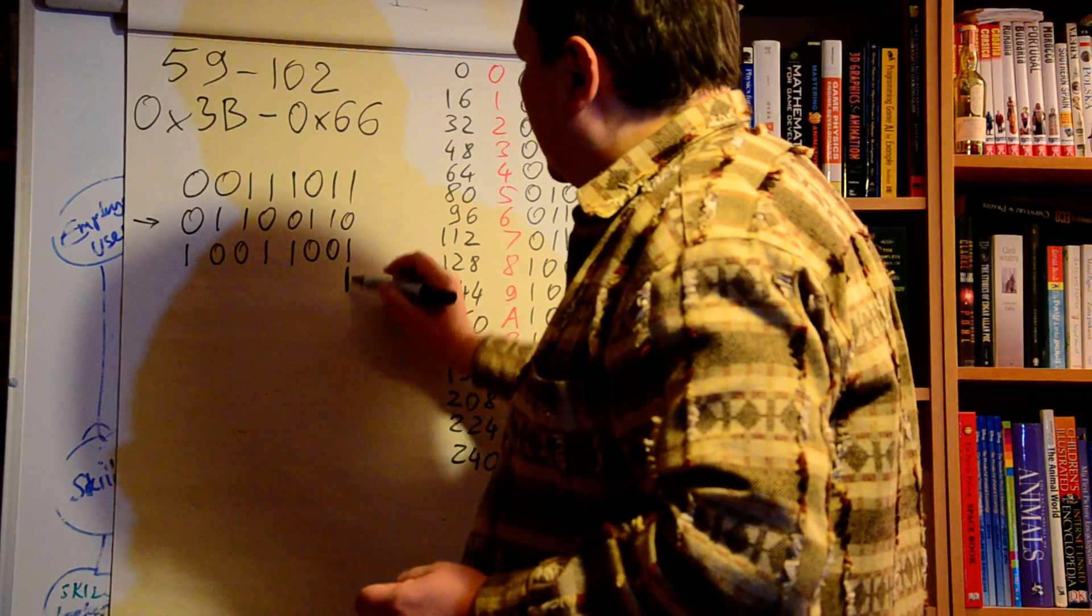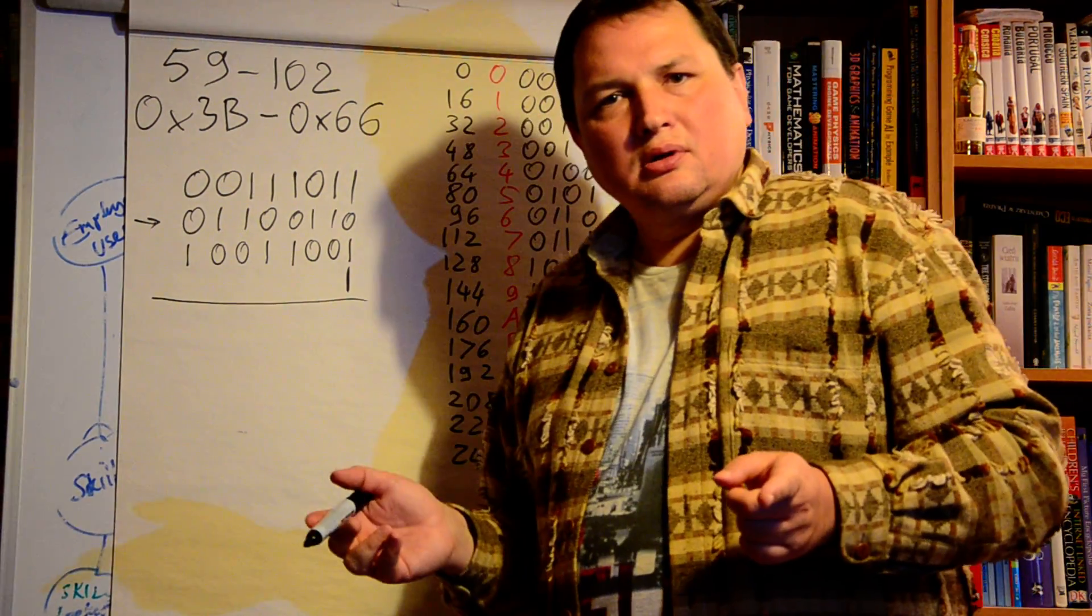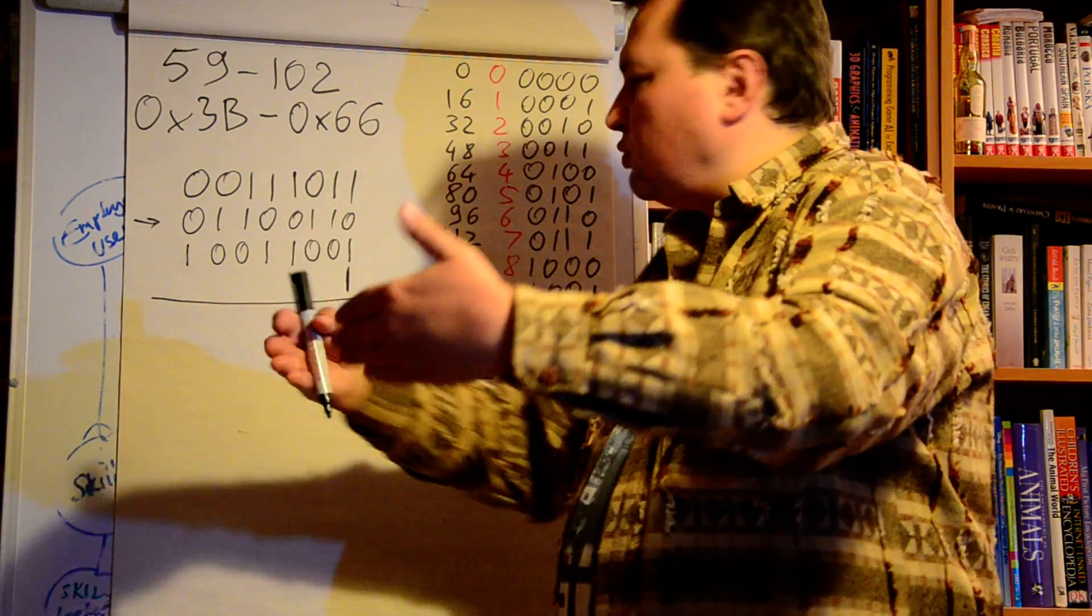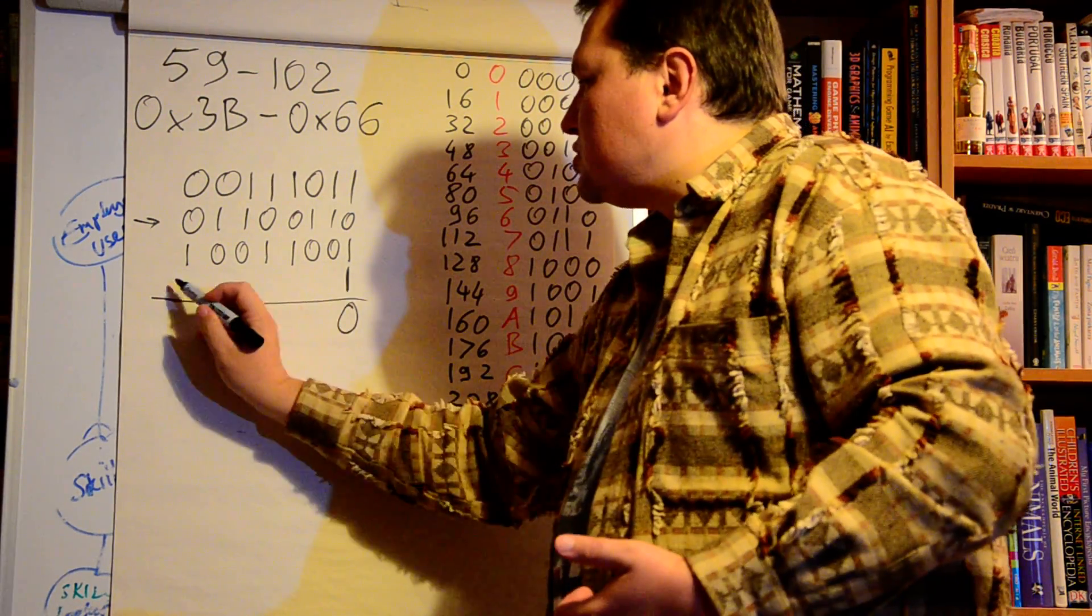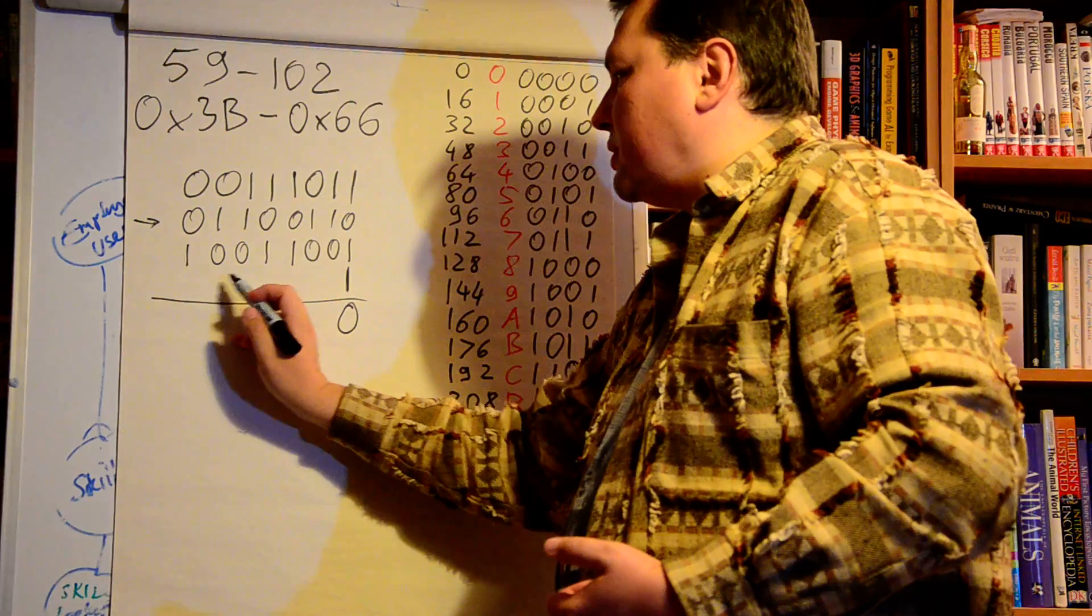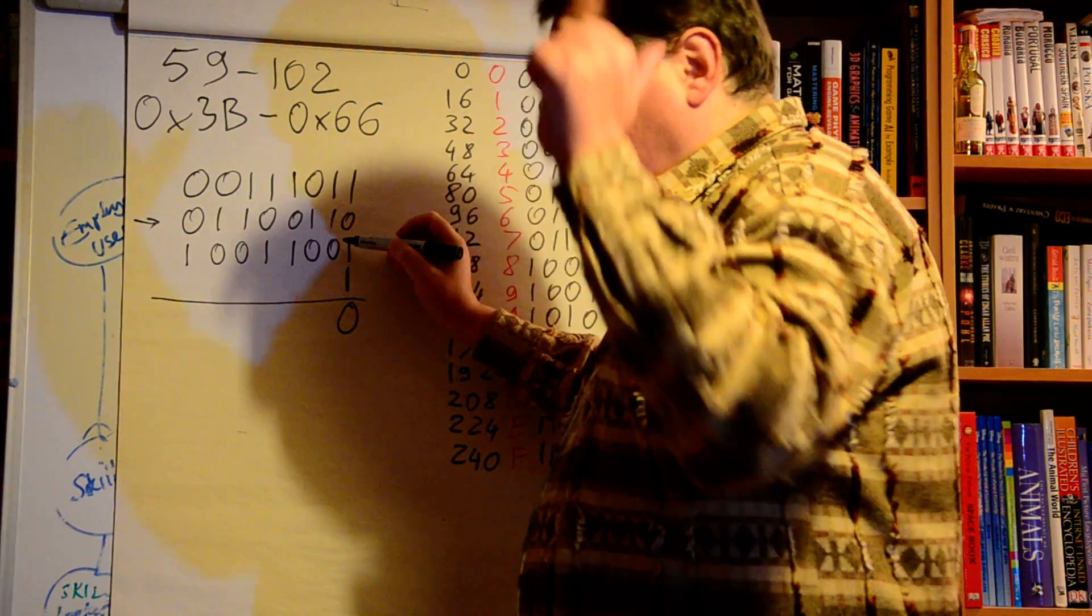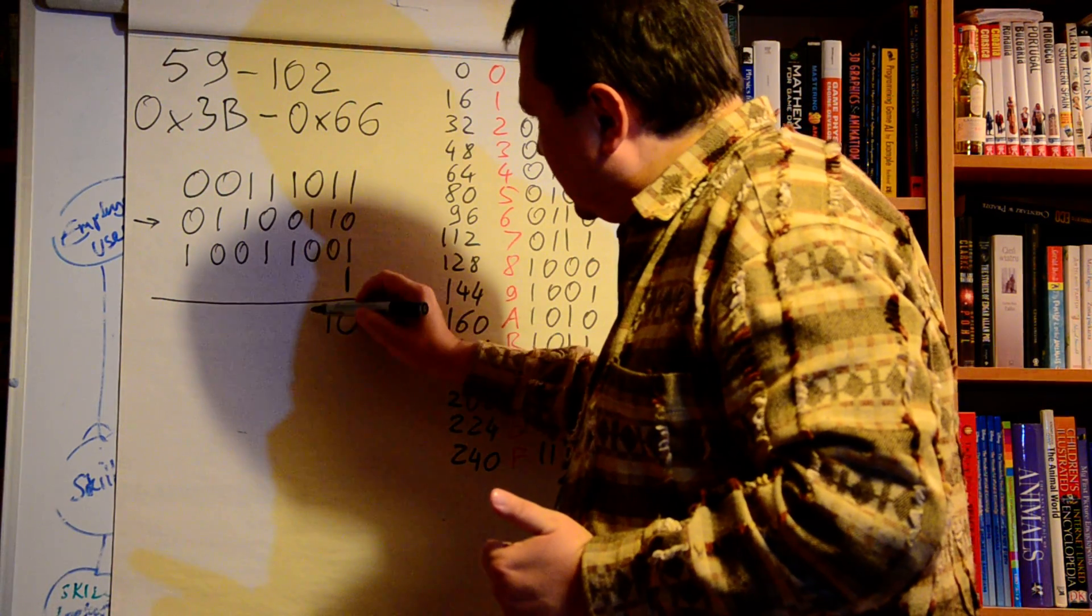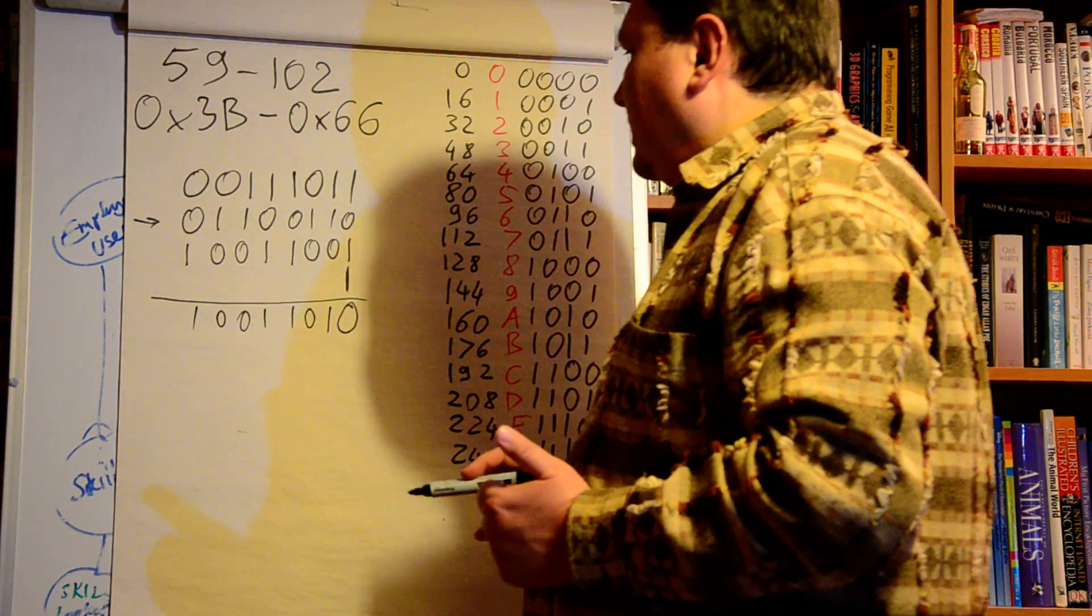And we also have to add one. One plus one is one zero, so we put zero here and carry one. Here are just zeros, so I remember about my carried one, which goes here, and I simply rewrite all the remaining digits. So this is my minus 102.